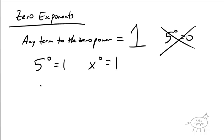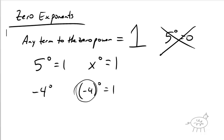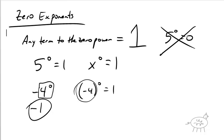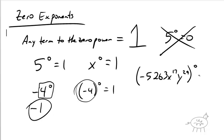Let's talk about parentheses. If I have negative four to the zero power versus negative four to the zero power with parentheses — the one with parentheses equals one because you're raising the whole negative four to the zero power. Without parentheses, the exponent only affects the four, so it's negative times one, which is negative one. When you have parentheses, the whole negative four is raised to the zero power, so that's positive one. For example, negative 5263x to the 17th y to the 29th, all to the zero power, equals one.